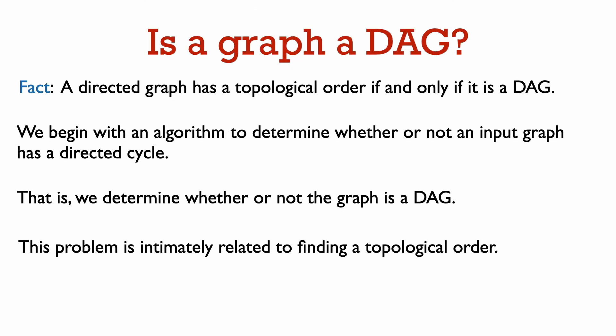So this fact shows that topological order is very closely related to directed cycles. If the graph has a directed cycle, we won't be able to find a topological order. So we're actually going to start out with this algorithmic problem. Given a directed graph, does it contain a directed cycle?